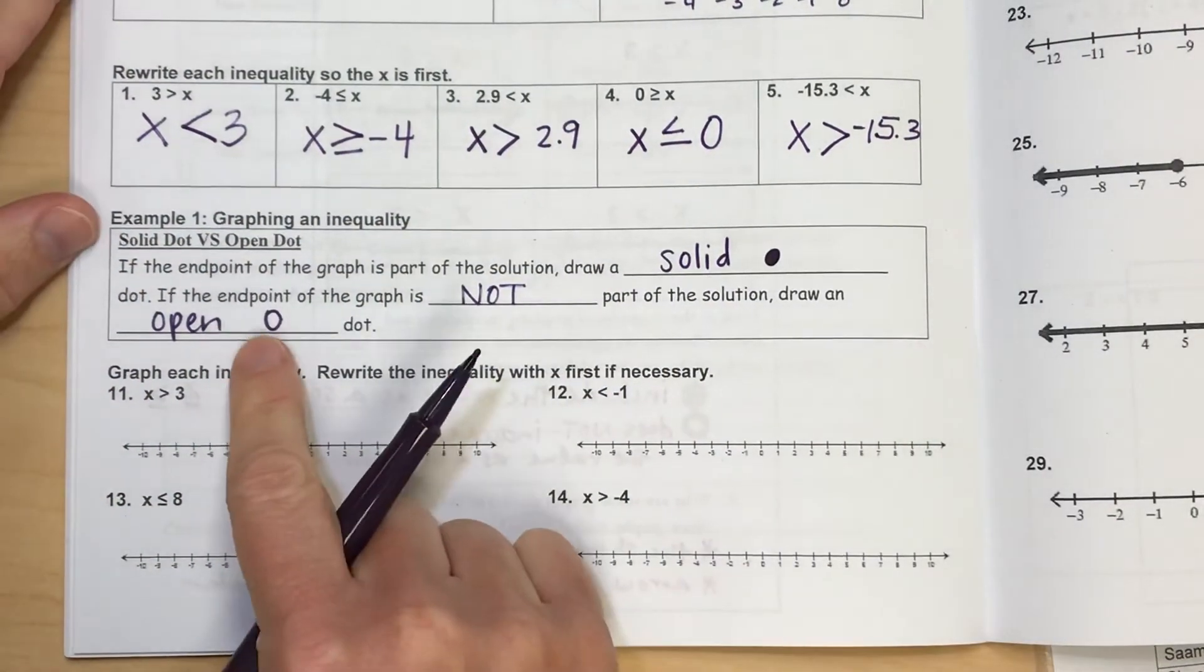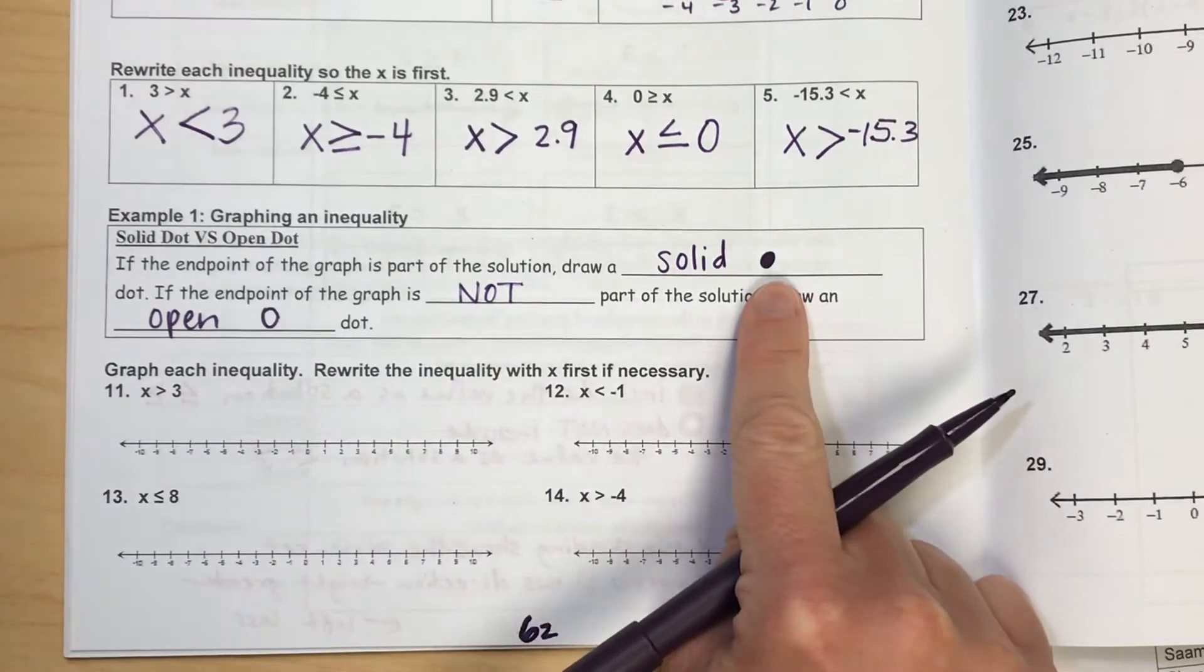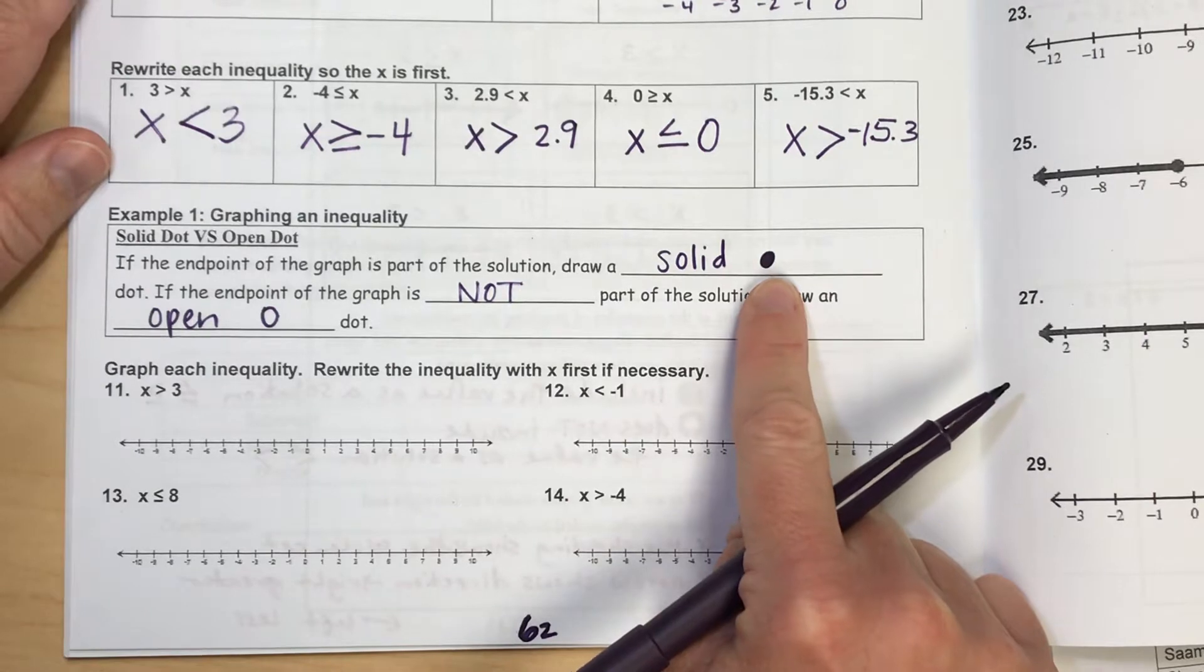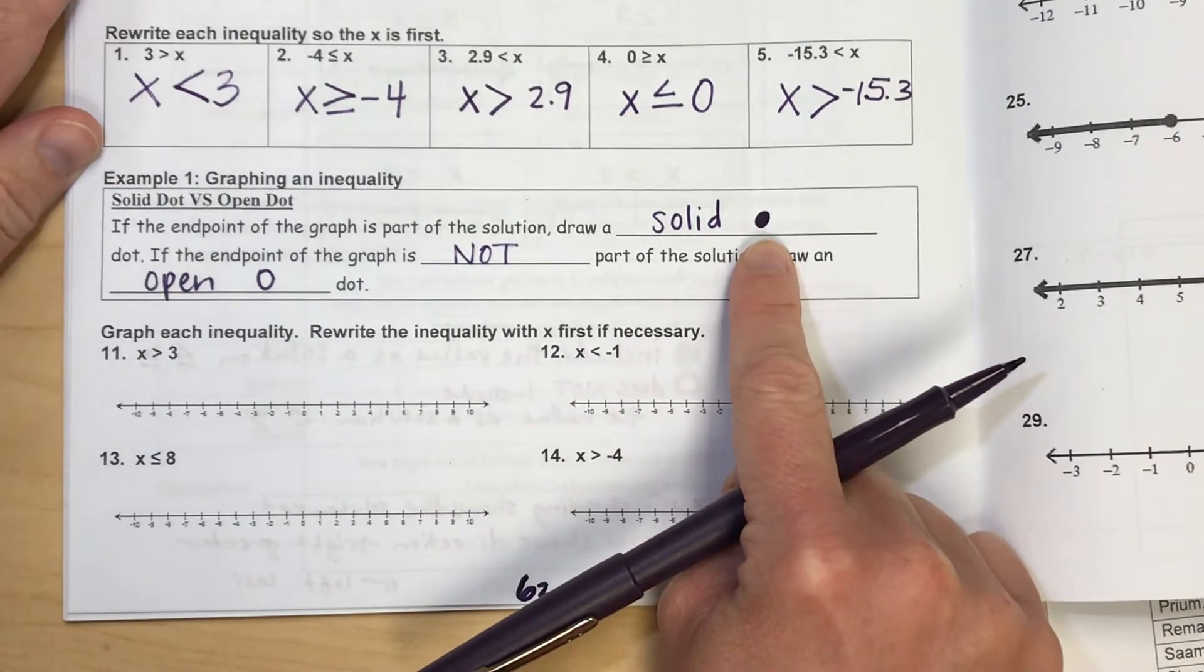So you're going to circle the number and not fill it in if it's not part of the solution. But if it says equal to on the inequality sign, you would circle that number and fill it in to show that it is part of your solution set.